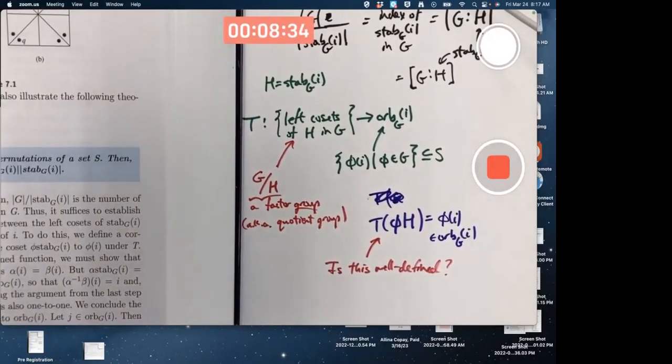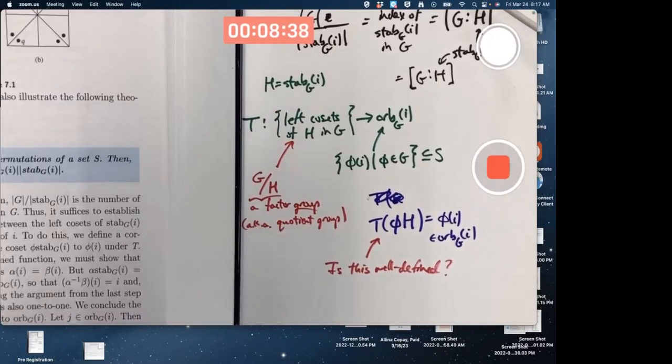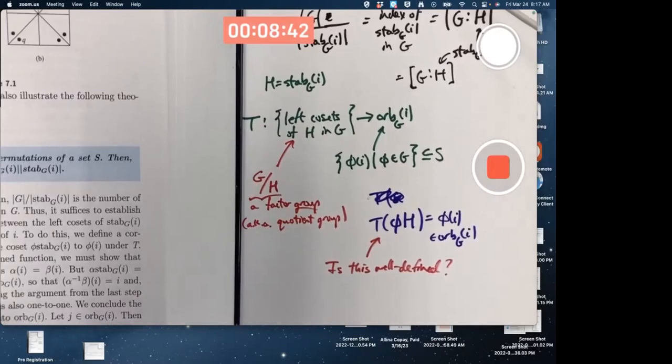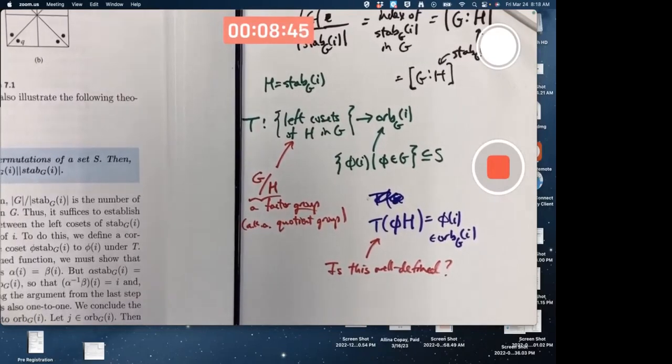Here's the key issue. Go back to equivalence classes. Equivalence classes have, you know, they partition a set. And in each equivalence class, you have more than one element. Typically, you have different representatives of the same equivalence class.